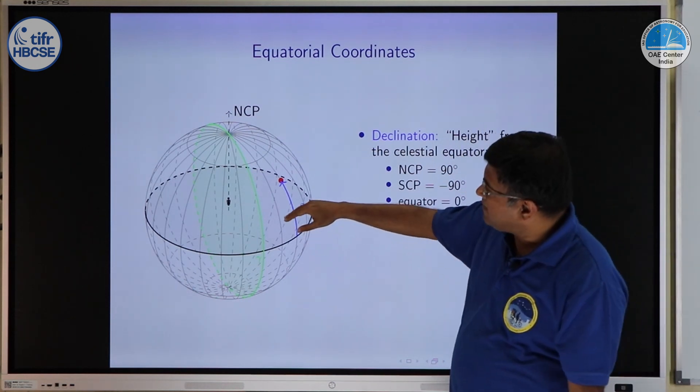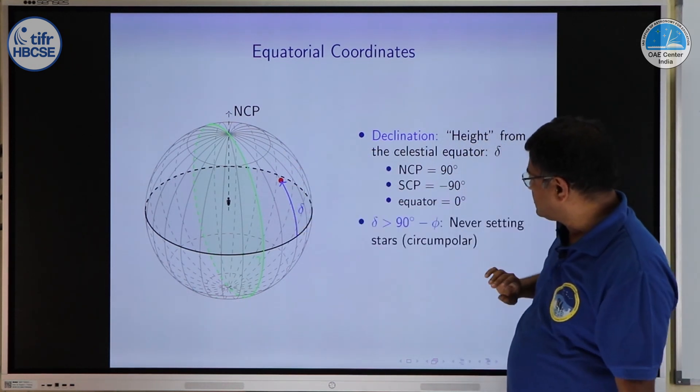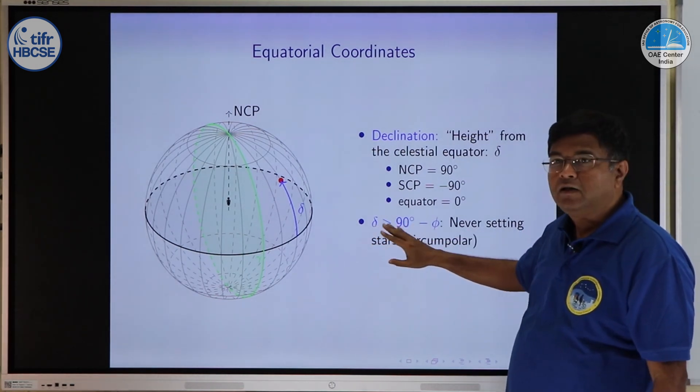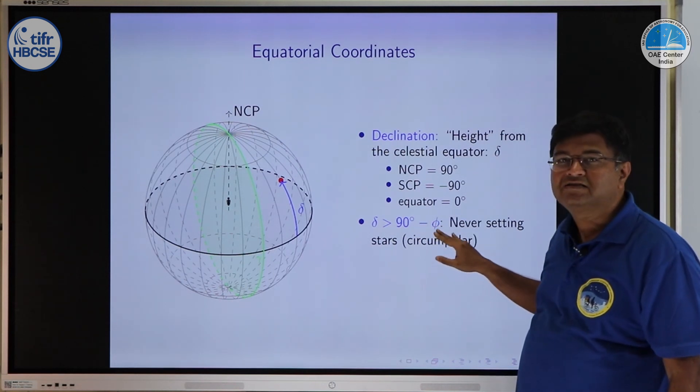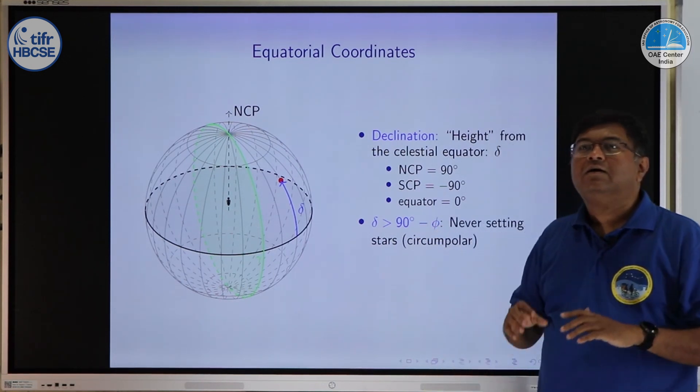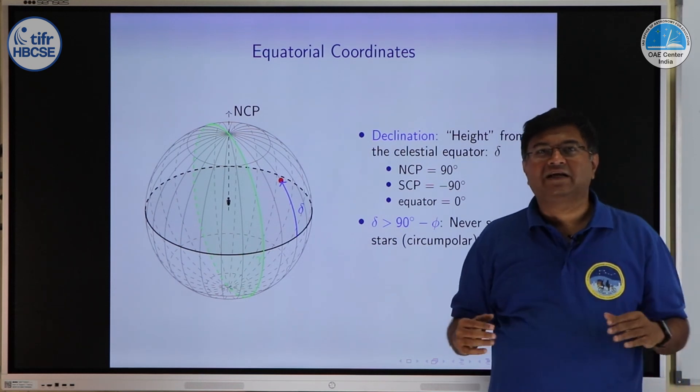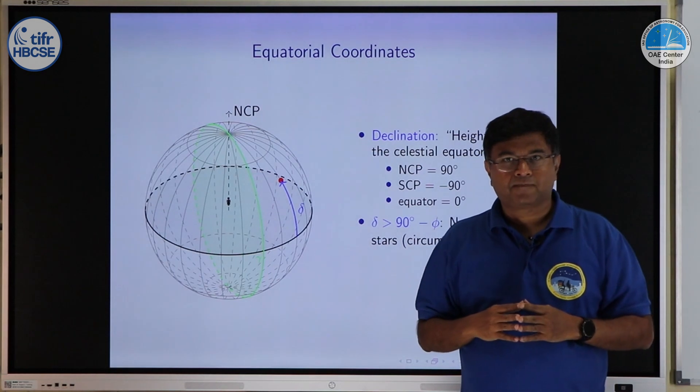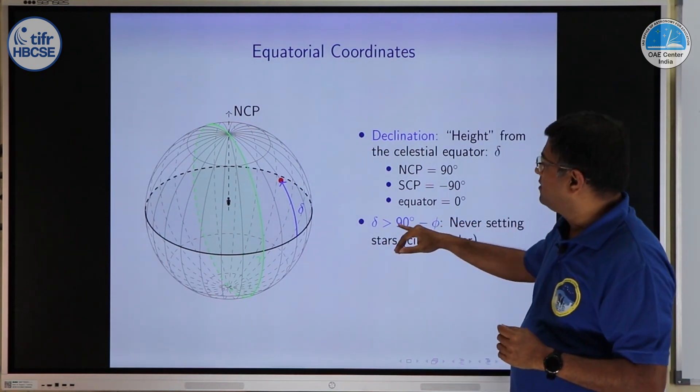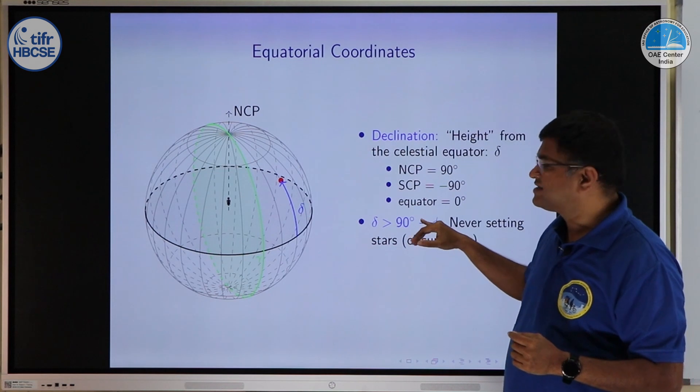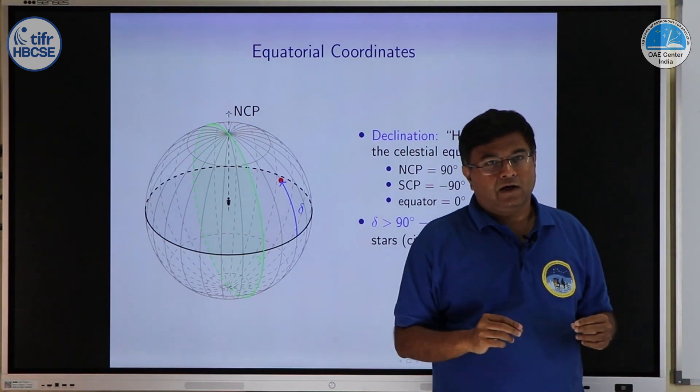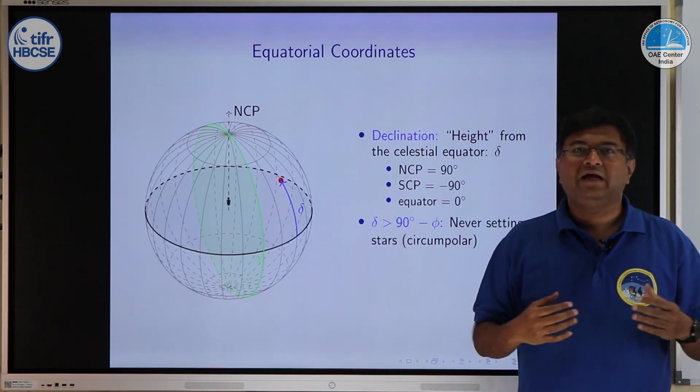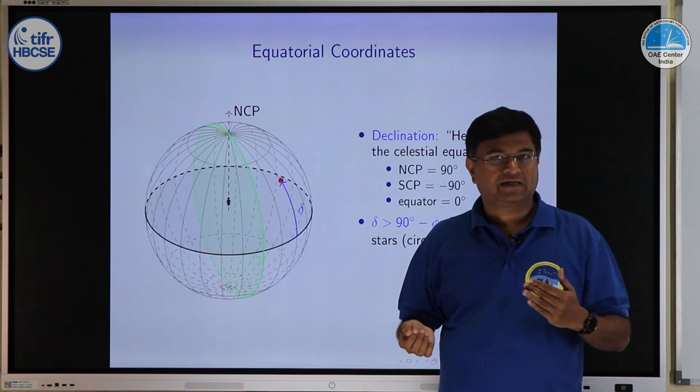For that if you just imagine how it looks, we can say if declination of a star is more than 90 minus phi, where phi is latitude of your place, then that star will never set at your location. Suppose you are in Mumbai where latitude is 19 degrees. What you put 19 degrees here? 90 minus 19 you get 71 degrees. So, any star whose declination is more than 71 degrees will always remain in your sky, it will be a circumpolar or never setting star.